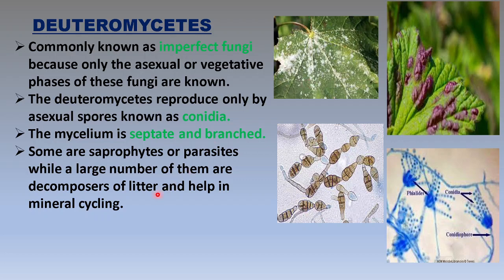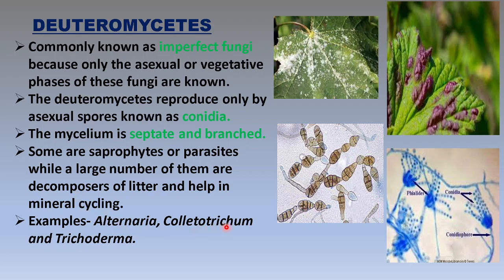Some are saprophytes or parasites; a large number are decomposers of litter and involved in mineral recycling. Examples include Alternaria, Colletotrichum, and Trichoderma. Trichoderma can cause skin infections in humans, and Alternaria causes diseases in wheat plants. This covers all four classes of kingdom fungi. While studying, you can compare each class with reference to their vegetative as well as reproductive structures. Thank you.